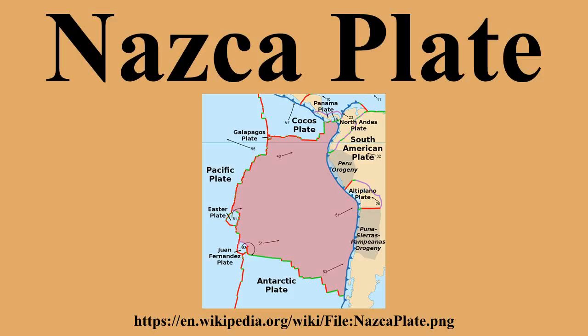Boundaries: East Pacific and Chile Rise — A Triple Junction. The Chile Triple Junction occurs on the sea floor of the Pacific Ocean off Taitao and Tres Montes Peninsula at the southern coast of Chile. Here three tectonic plates meet: the Nazca Plate, the South American Plate, and the Antarctic Plate. The eastern margin is a convergent boundary subduction zone under the South American Plate and the Andes Mountains, forming the Peru-Chile Trench.